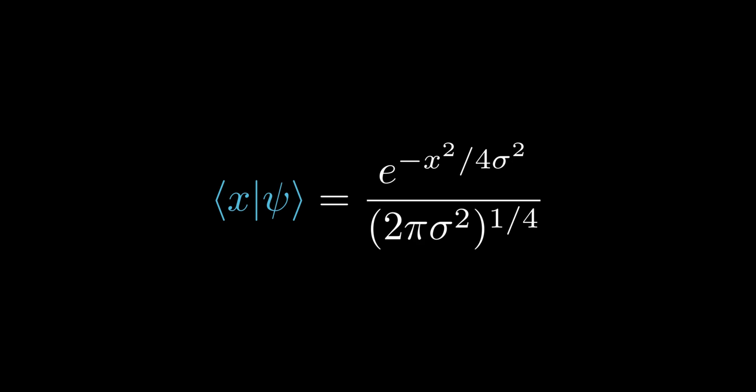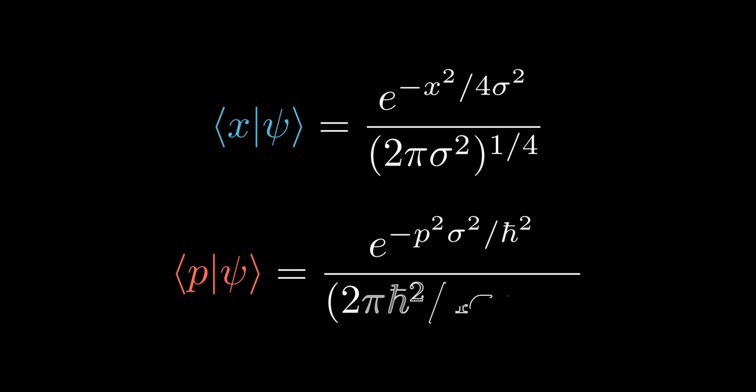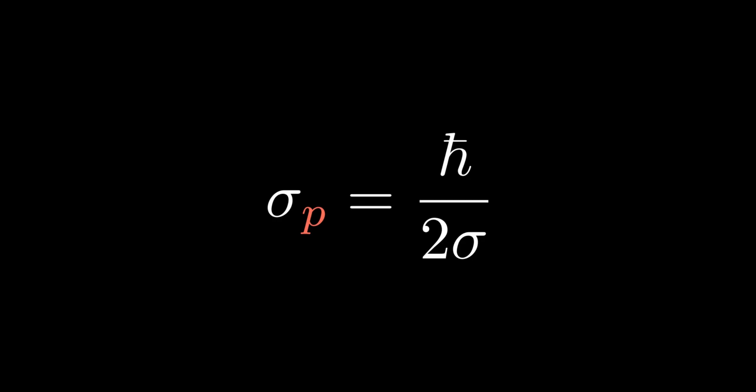After some very tedious algebra, which is left as an exercise for the audience, we obtain the momentum basis wave function given on the screen. Hence, the momentum of the particle is also normally distributed with sigma p equals to h-bar over 2 sigma. This further suggests the product of uncertainties in position and momentum is exactly h-bar over 2.